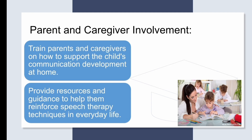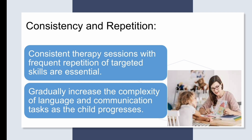Parent and Caregiver Involvement: Train parents and caregivers on how to support the child's communication development at home. Provide resources and guidance to help them reinforce speech therapy techniques in everyday life. Consistency and Repetition: Consistent therapy sessions with frequent repetition of targeted skills are essential. Gradually increase the complexity of language and communication tasks as the child progresses.